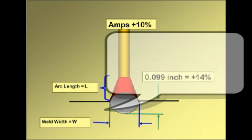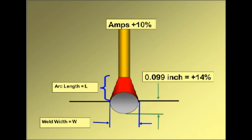The most influential factor on penetration is current, because amps are raised to the fourth power. The penetration increases to .099 inches, or plus 14%.